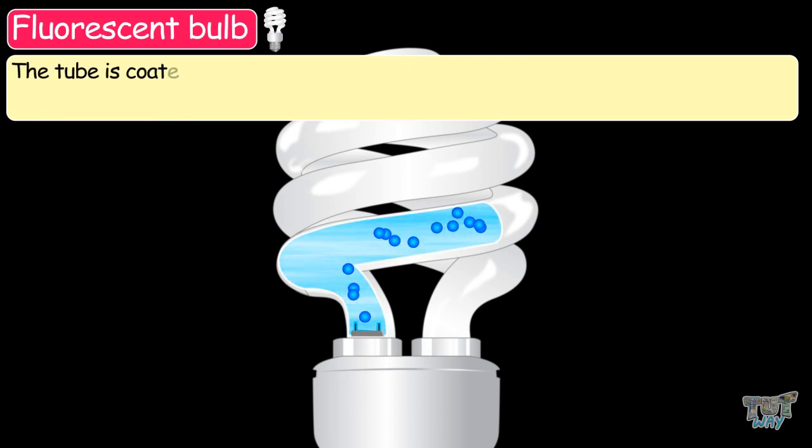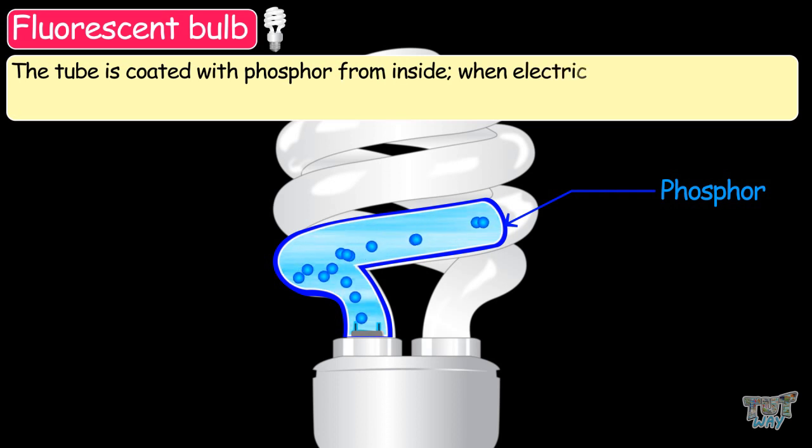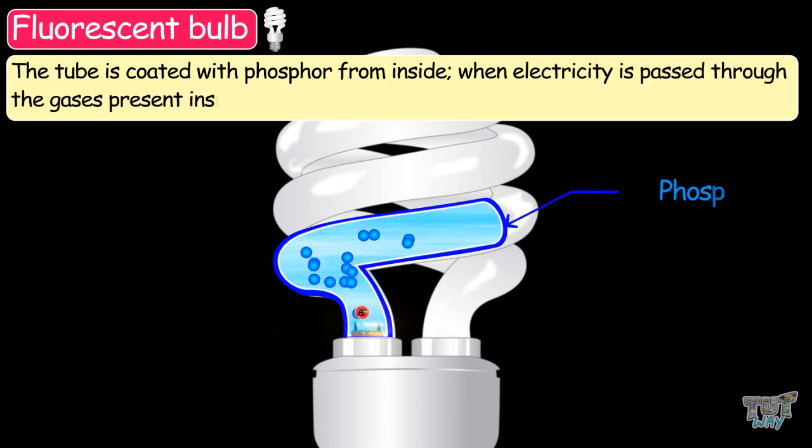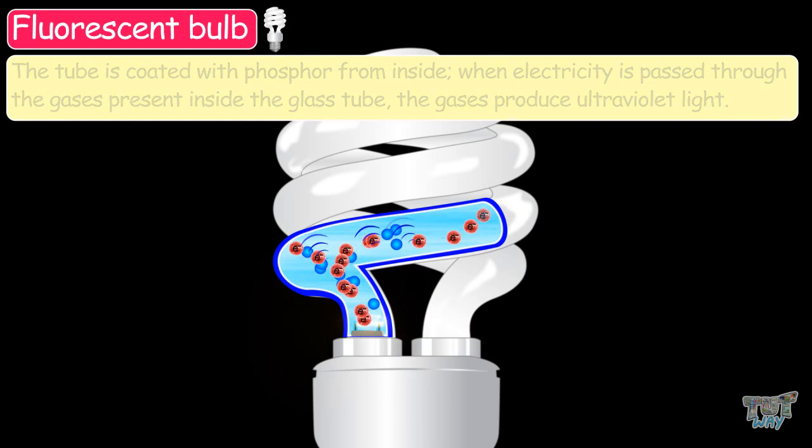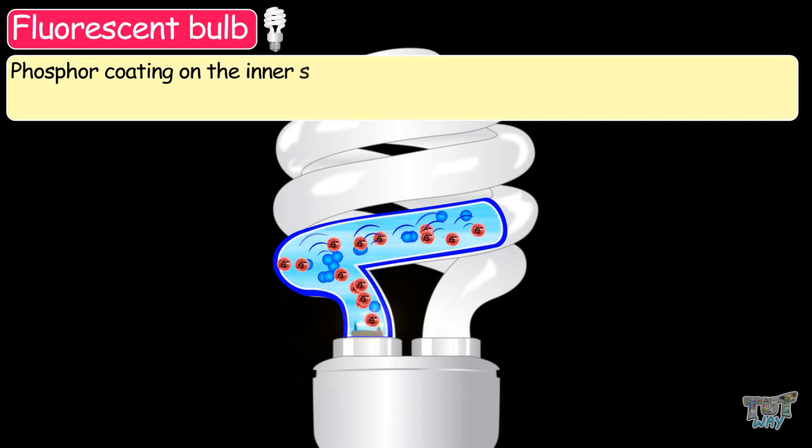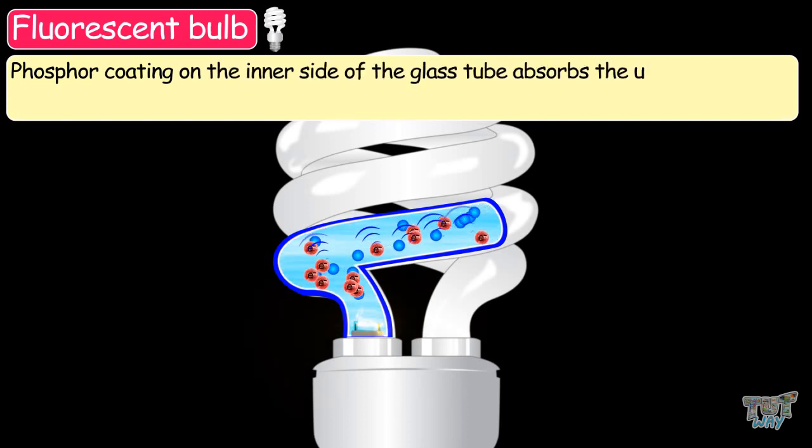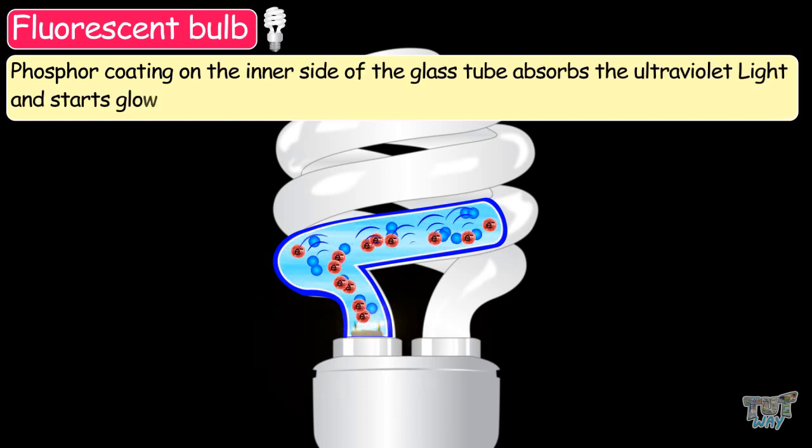The tube is coated with phosphor from the inside. When electricity passes through the gases present inside the glass tube, gases produce ultraviolet light. Phosphor coating on the inside of the glass absorbs the ultraviolet light and starts glowing.